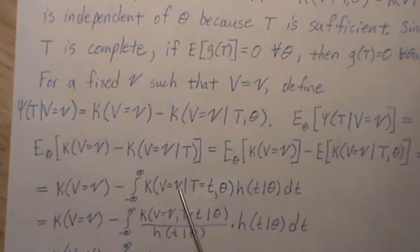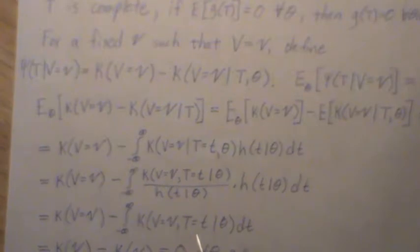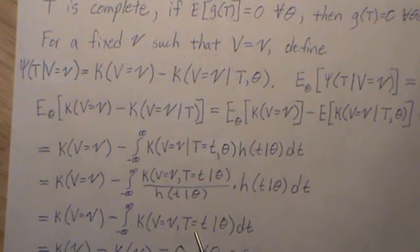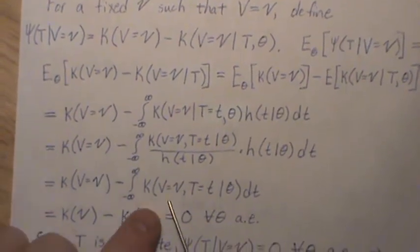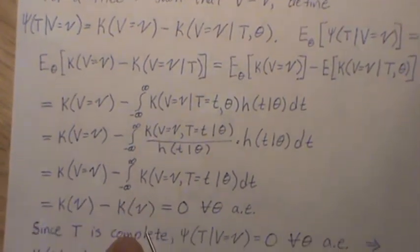Now this is a conditional density or distribution. So we can take the intersection divided by the marginal, and then those cancel, and we're left with this. But here, this is a joint distribution, and we're integrating out all possible values of t. So what's left is k of v, k of v given theta, but v is ancillary, so it's just really k of v.